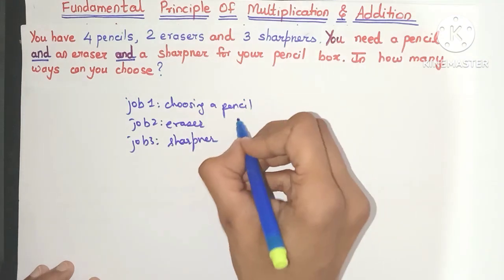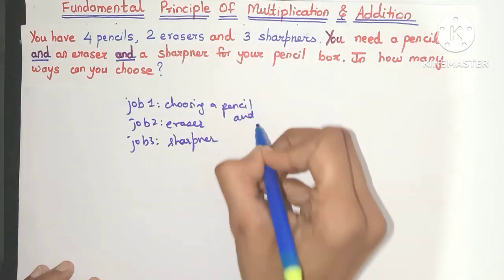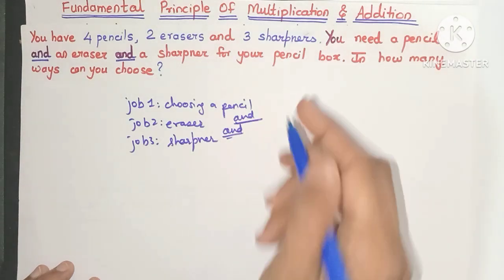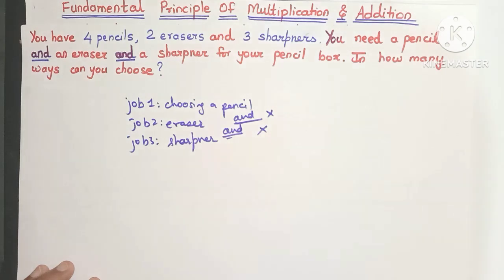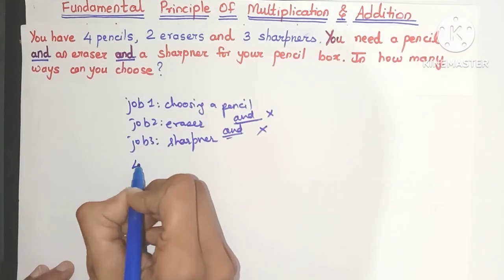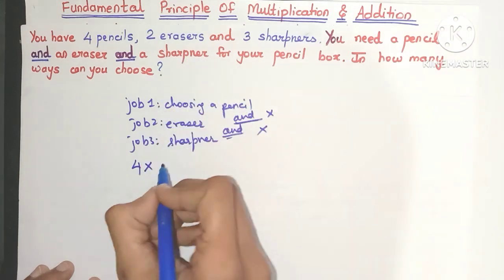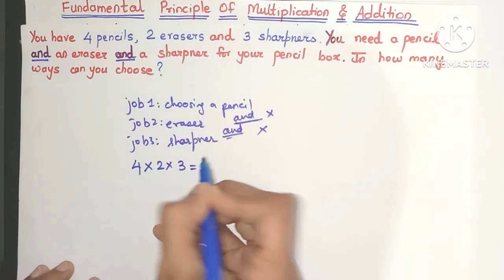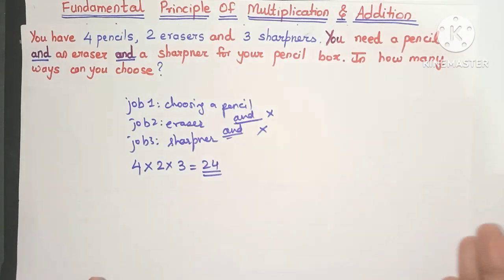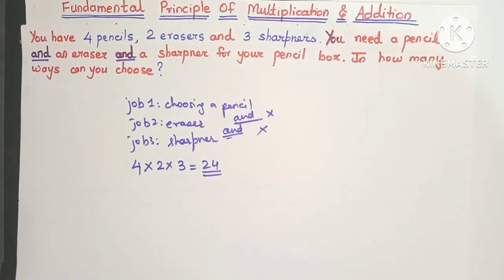We have to choose a pencil and an eraser and a sharpener. So wherever 'and' comes, you should use the principle of multiplication — that is, multiply the different choices. I have four pencils, so four multiplied by two multiplied by three, which is 24. So there are 24 ways of choosing the pencil, eraser, and sharpener.